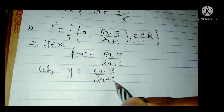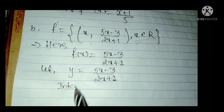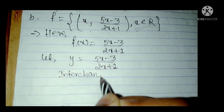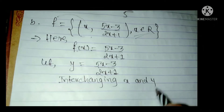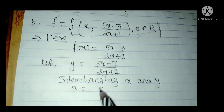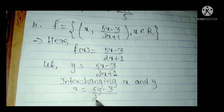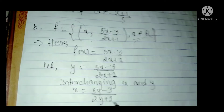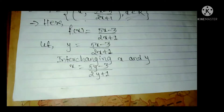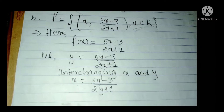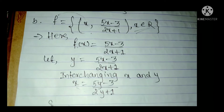The first step is done. Now the second step: interchange x and y. Interchanging x and y means where x was put y and where y was put x. Then the third step: solve for y — find the value of y. To solve, we cross multiply: x into (2y plus 1).